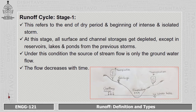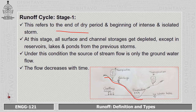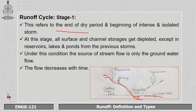There are four different stages of the runoff cycle. Stage 1 refers to the end of the dry period and the beginning of an intense and isolated storm. As shown in this figure, the water in the stream is very low because it is the end of the dry period and the rainy season is just starting. All surface and channel storage is depleted except in reservoirs. The source of stream flow is only groundwater flow, and the water table is also lowered due to losses. The flow decreases with time.